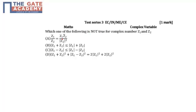Option A is Z1/Z2 equals Z1 times Z2 bar divided by mod of Z2 square.